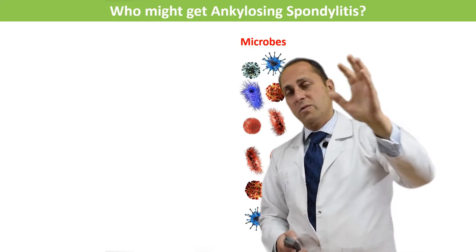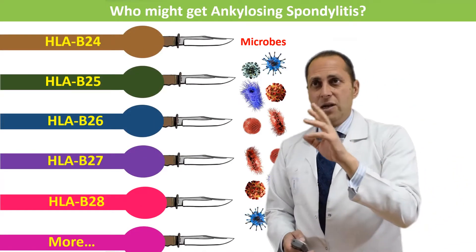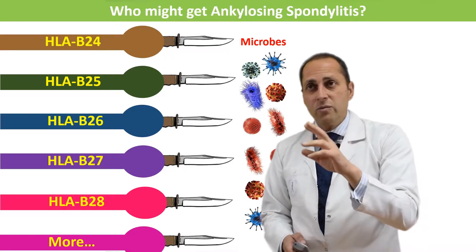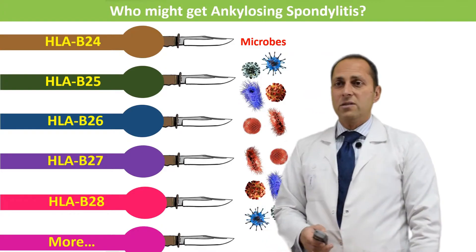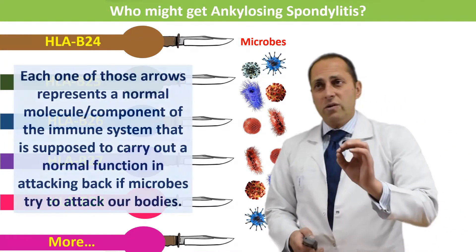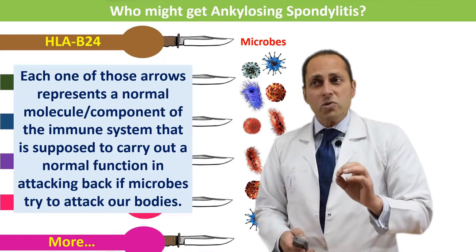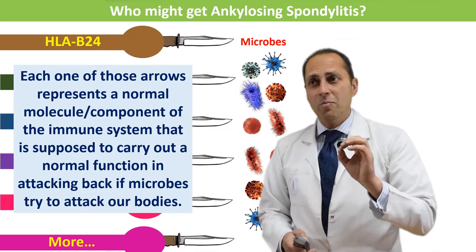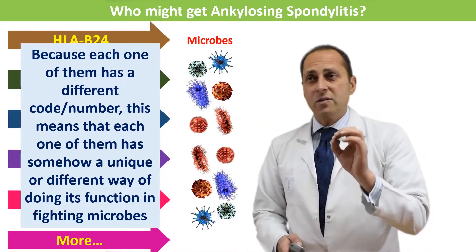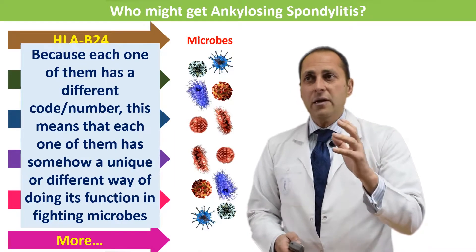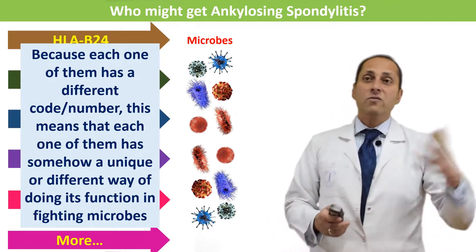Look at those microbes — those are microbes that might enter the body. Those arrows represent HLA-B molecules: HLA-B24 (the brown one), HLA-B25 (green), HLA-B26, B27, B28, and more. Each one of those arrows represents a normal molecule or component of the immune system that is supposed to carry out a normal function in attacking back if microbes try to attack our bodies. Because each one has a different code or number, each has a unique way of doing its function in fighting microbes.